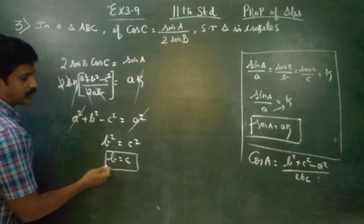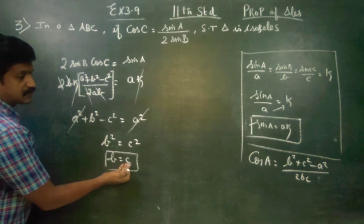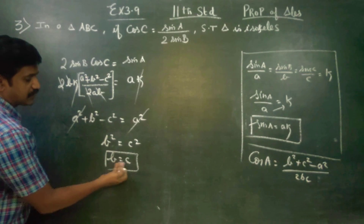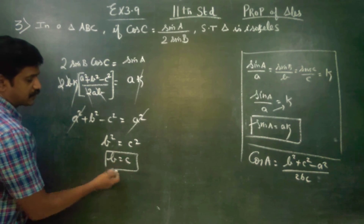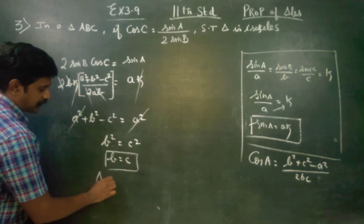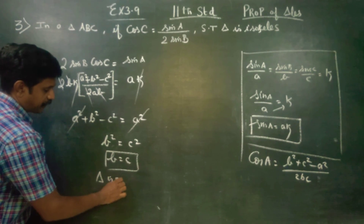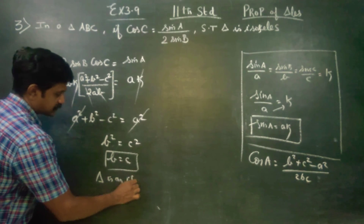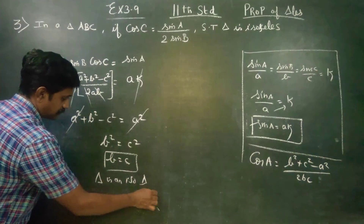Two sides are equal. This is one side. Two sides are equal, so it is an isosceles triangle. Therefore, the triangle is an isosceles triangle. Hence, proved.